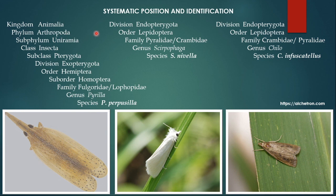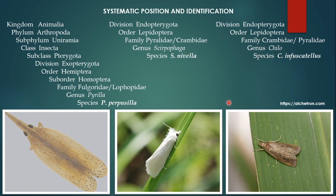Next is Scirpophaga nivella. It belongs to order Lepidoptera, which includes moths and butterflies that have scaly wings — 'lepido' means scales and 'ptera' means wings. Both Scirpophaga nivella and Chilo infuscatellus are moths, so they both belong to order Lepidoptera. Their family names are also the same: Pyralidae or Crambidae. The genus is Scirpophaga and species is Scirpophaga nivella. For Chilo, genus is Chilo and species is Chilo infuscatellus.